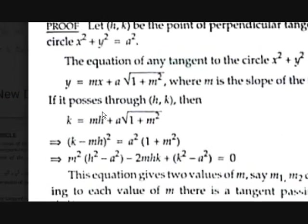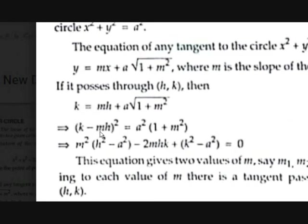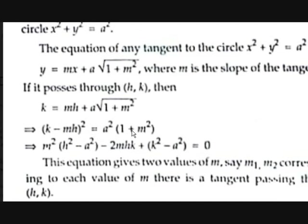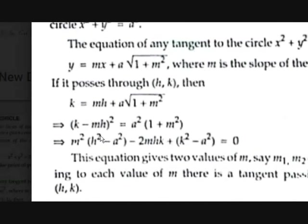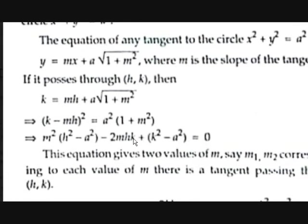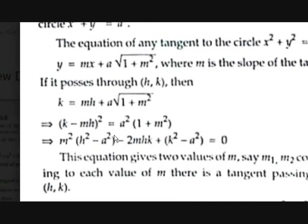Rearranging: k − mh = a√(1+m²). Squaring both sides: (k−mh)² = a²(1+m²). Expanding: m²(h²−a²) − 2mhk + (k²−a²) = 0. This is a quadratic in m, giving two values m1 and m2, one for each tangent through (h, k).